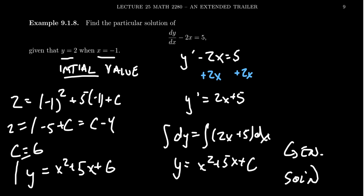This type of explicit antidifferentiation problem — which we've been doing many times previously — is just a special case of implicit antidifferentiation, also known as differential equations, which is what we're learning to do now.